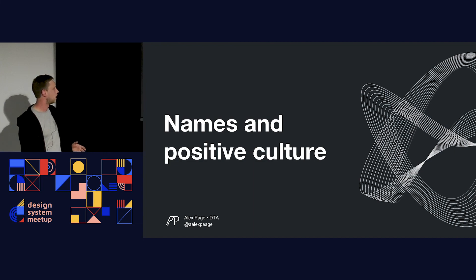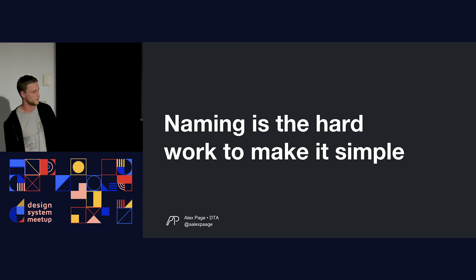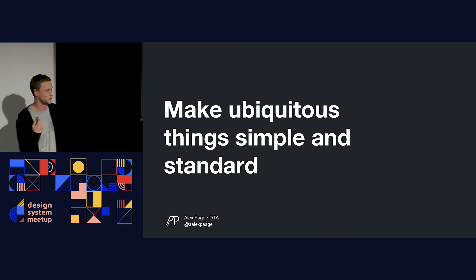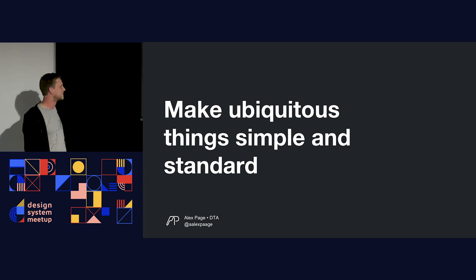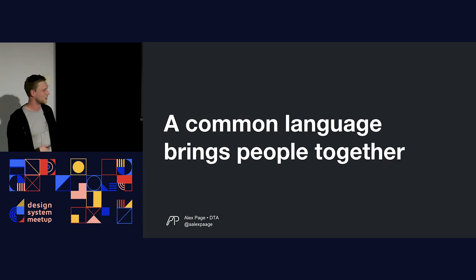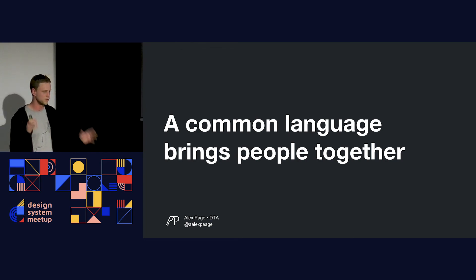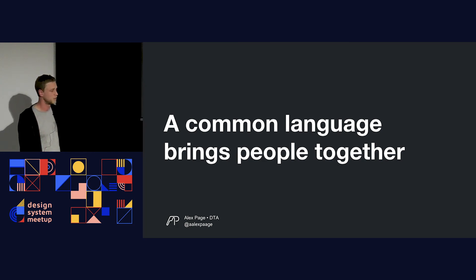In summary, the way that you name things can create a positive culture, and naming is the hard work to make things simple. Make ubiquitous things simple and standard — don't call your small 'Like It' and your medium 'Love It,' just call it small and medium. A common language brings people together. When you see conflict or confusion, think: is this a language problem? Is this a communication problem? Can it be solved by using a common language or changing the way we name things?